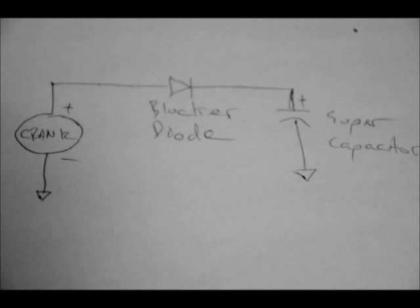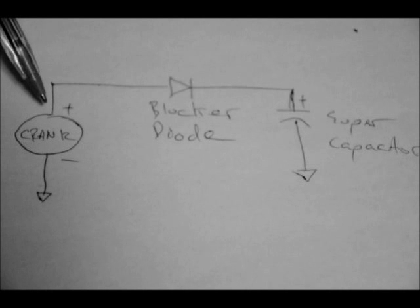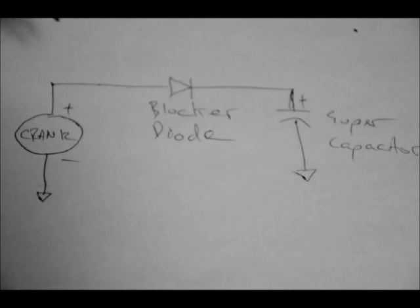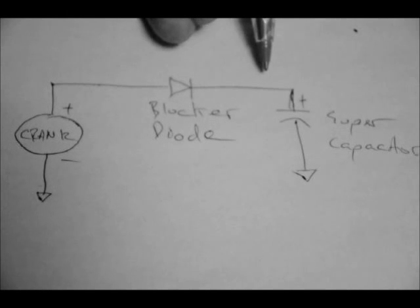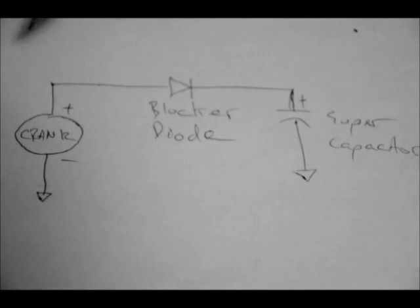Now, the blocker diode is necessary because if you don't have this blocker diode here, anything you generate is going to go right back through the motor to ground because the motor is essentially just a big winding of wire. So there will be a direct path to ground after you stop winding your crank. This blocker diode allows current to pass through this way, but once you're done winding your crank, then the current can't pass back through the motor.